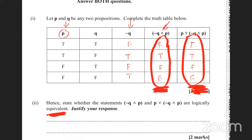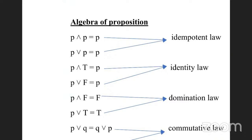Today we want to start this slightly harder part where we use the rules. We don't have to memorize these rules — once you know the truth tables you can figure them out. For example, p and p is p. p is a proposition — it could be true or false. True and true gives true, false and false gives false.